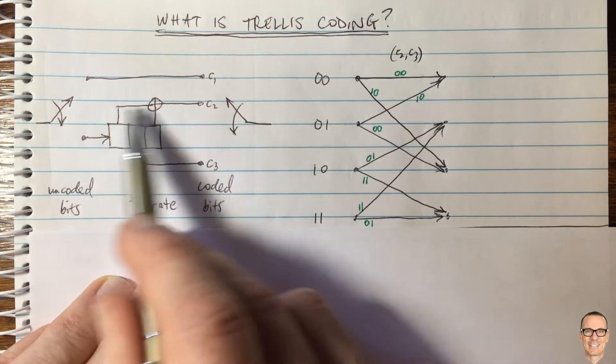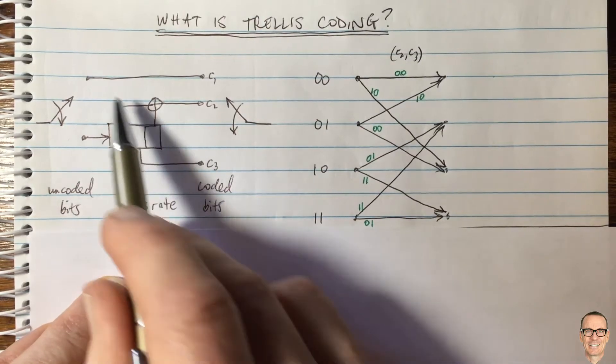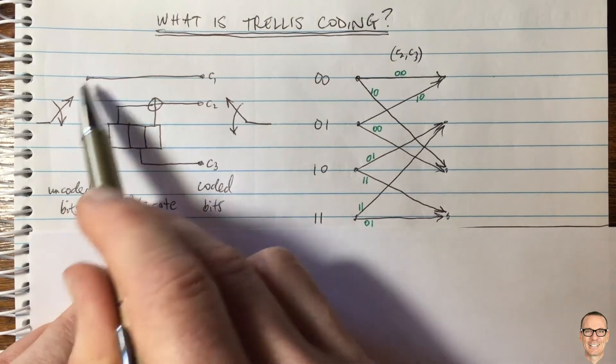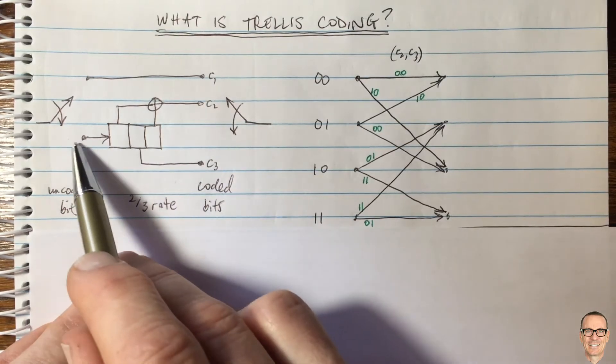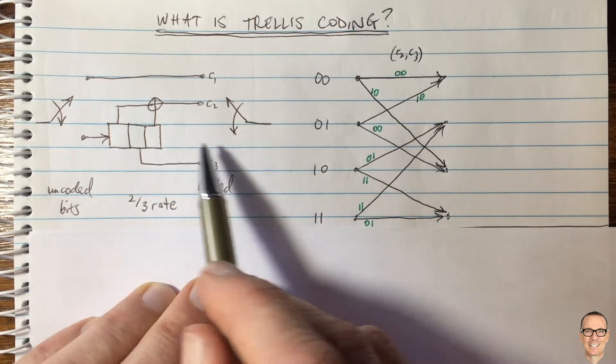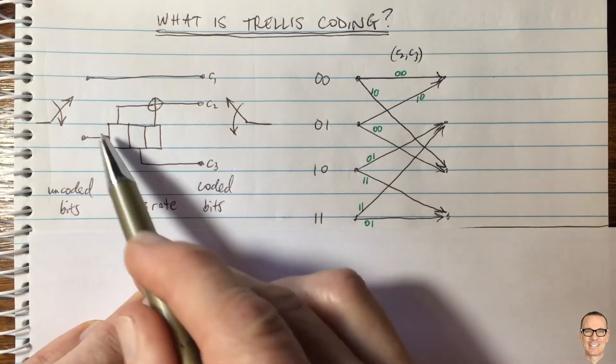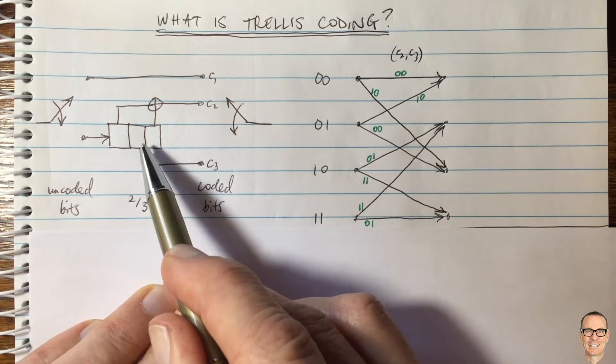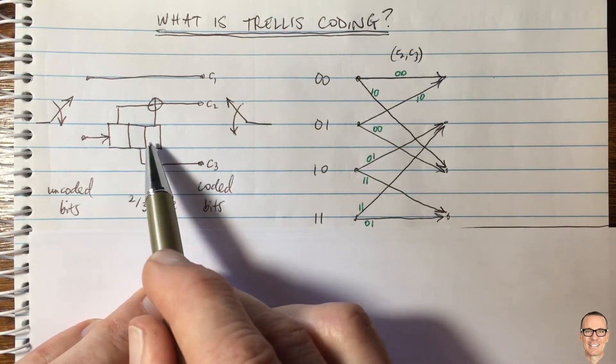So here's an example of convolutional code plus a direct line through bit. So one of the bits gets sent directly uncoded and the other bit gets coded. And here's a trellis for this convolutional coded component.